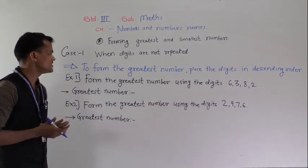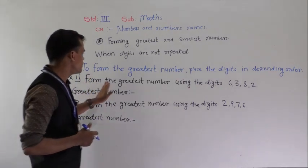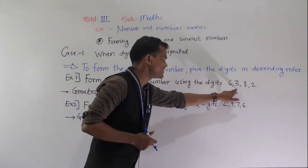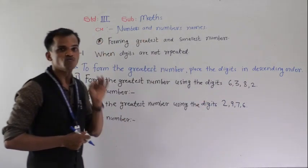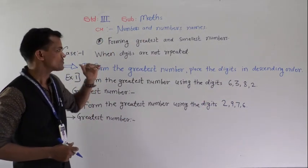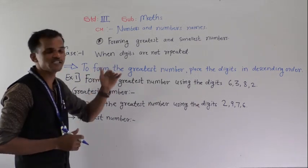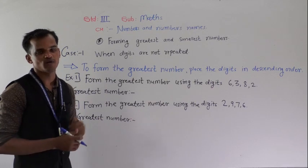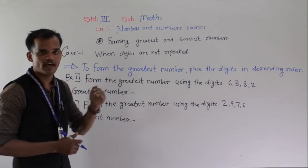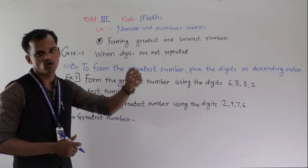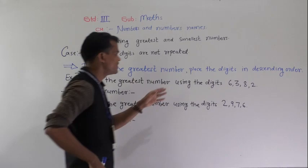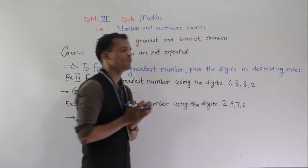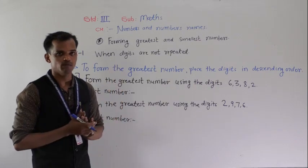Now we will see one example. Form the greatest number using the digits 6, 3, 8 and 2. To form the greatest number, place the digits into descending order. Descending order means big to small order — first write the greatest digit and then write smaller digits.